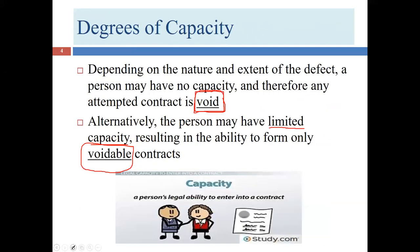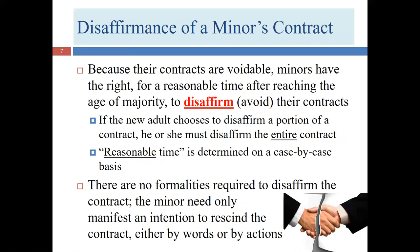When a minor enters into a contract, it is a voidable contract — not void, but something the minor can exit if they choose. The term for this exit is disaffirm. The minor has the ability to step out of the contractual responsibility. This is an important term for the test. The minor may disaffirm after reaching majority — after their 18th birthday — within a reasonable time.